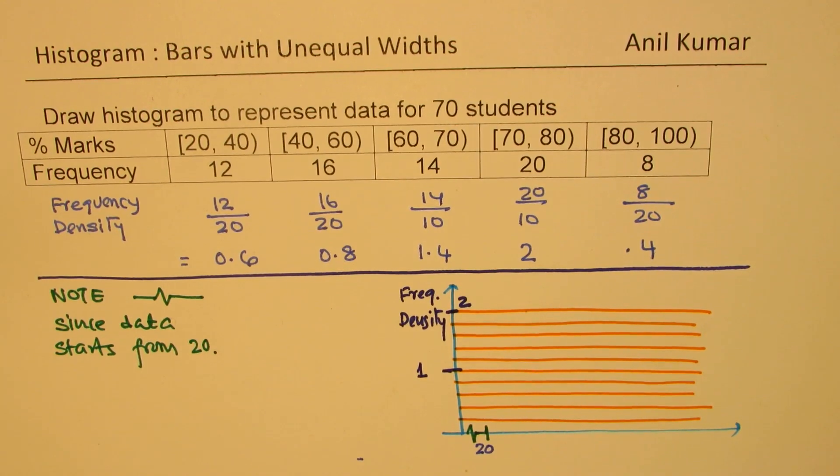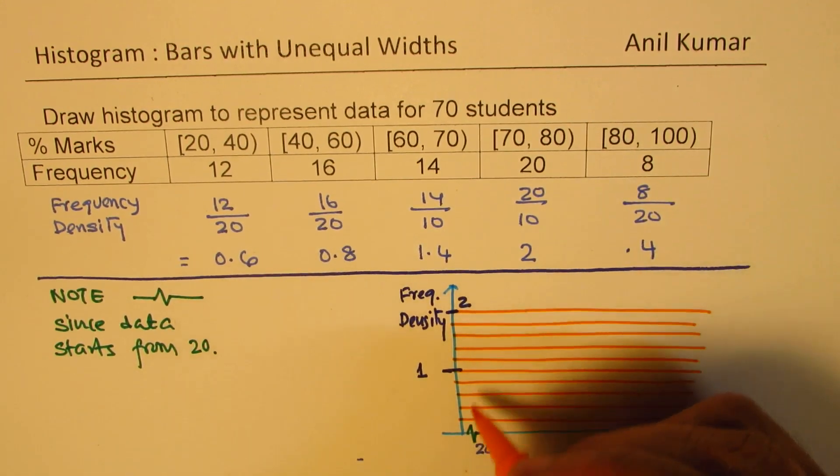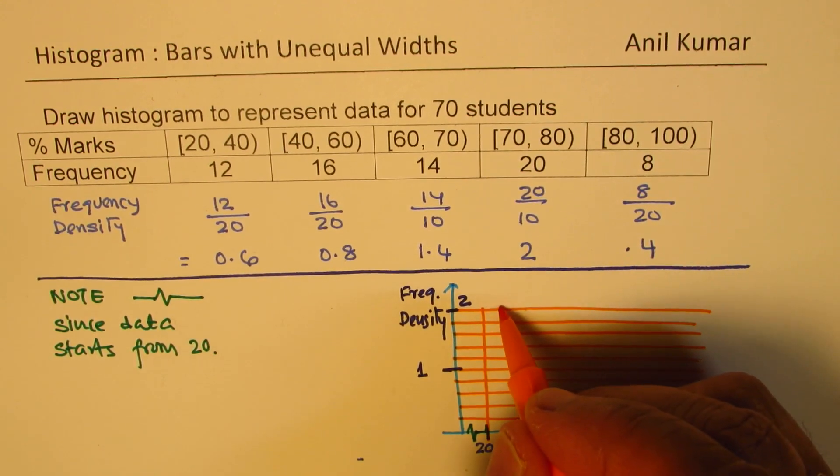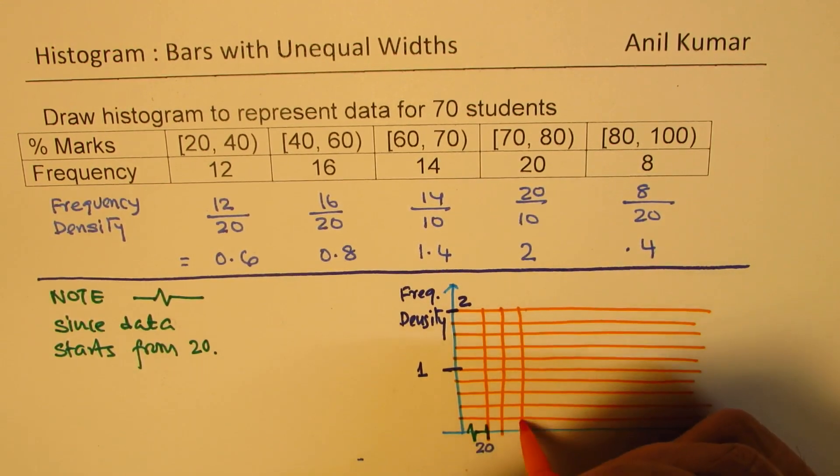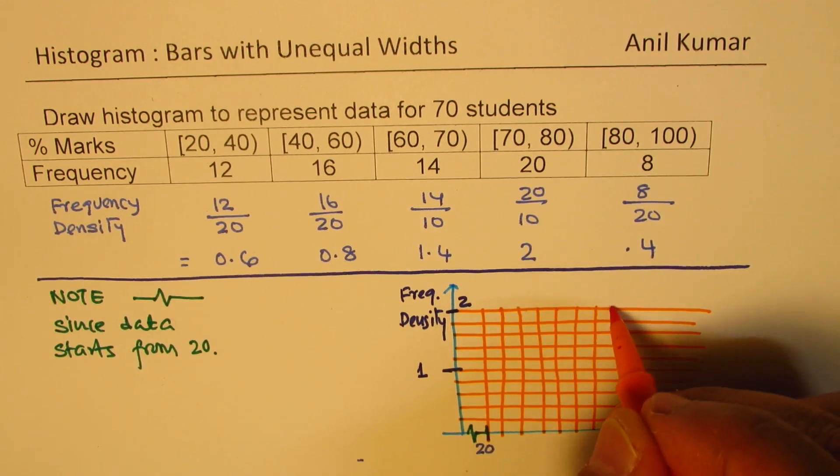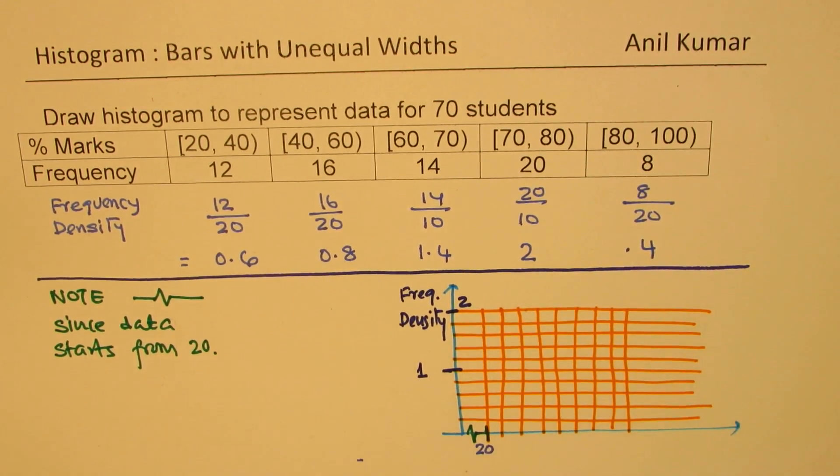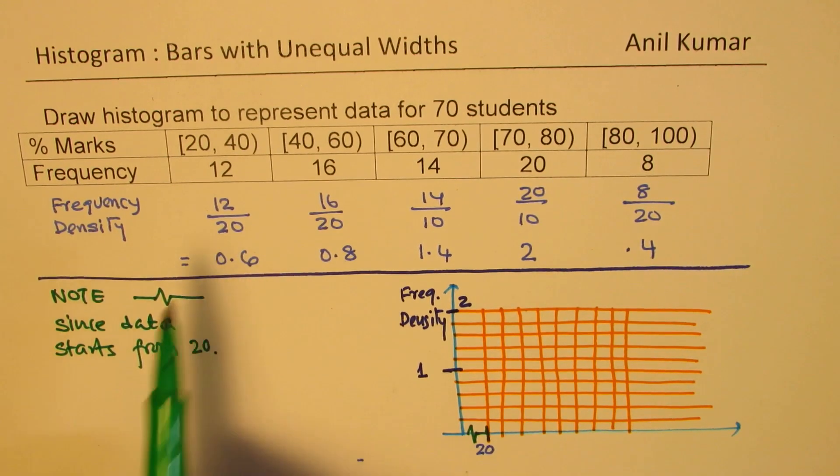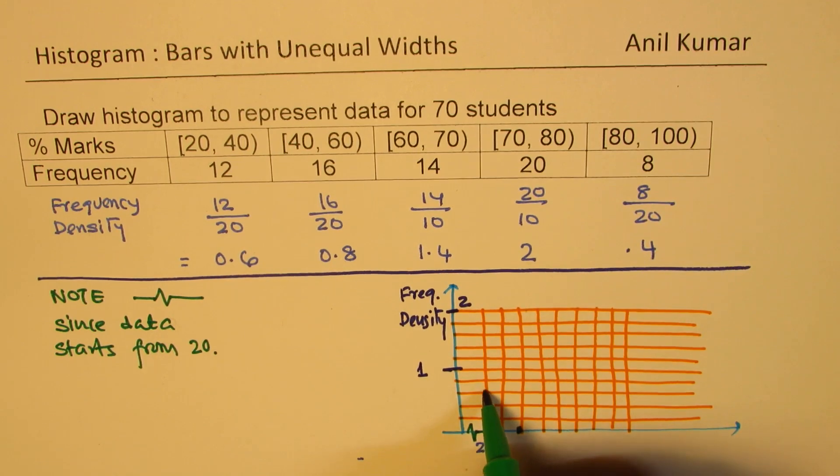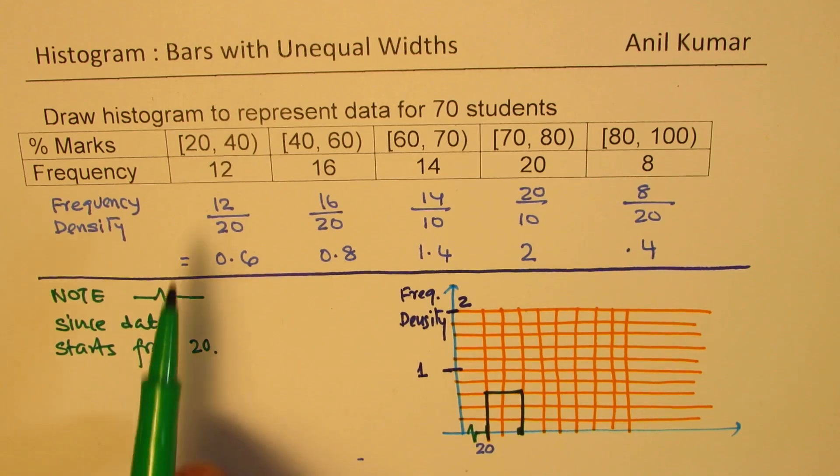From 20 to 40, we have divisions of 10 each. Let me draw the verticals: 20, then 30, 40, 50, 60, 70, 80, 90, 100. For the first interval 20 to 40, the density is 0.6. Each division is 0.2, so 0.2, 0.4, 0.6 - that's where our bar is.